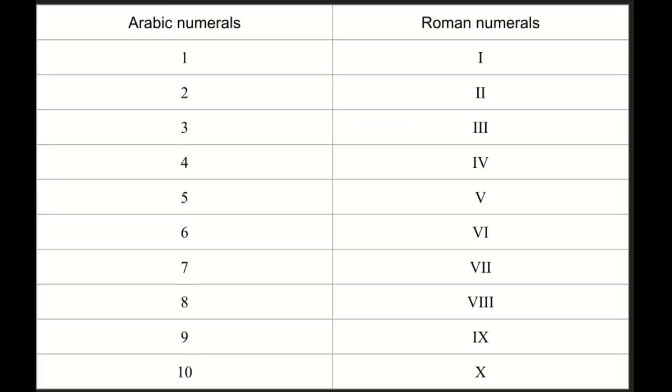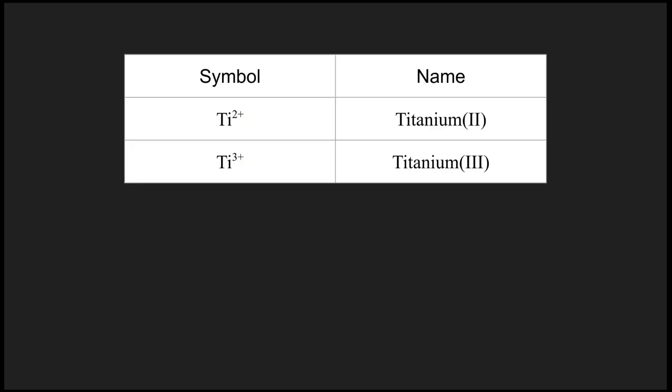Now we're going to talk about our Arabic numerals and how that relates to our Roman numerals. When we are keeping track of the names for these transition metals, which have more than one charge, we actually use Roman numerals. Titanium has two versions: titanium with a 2-plus charge or titanium with a 3-plus charge.